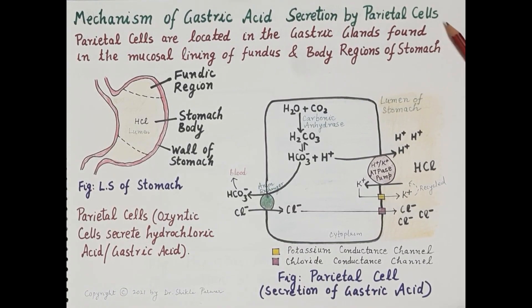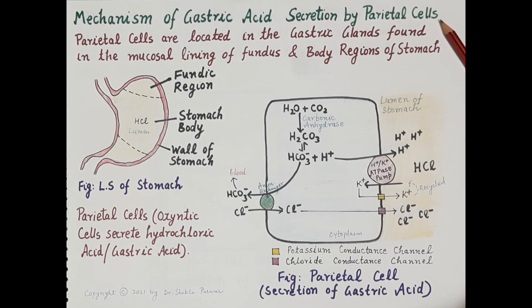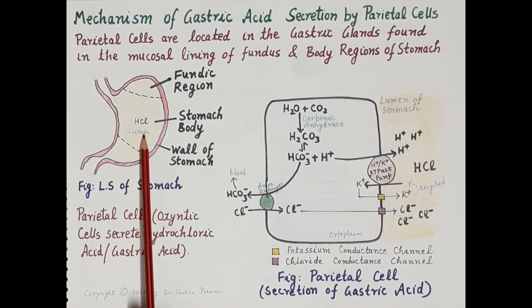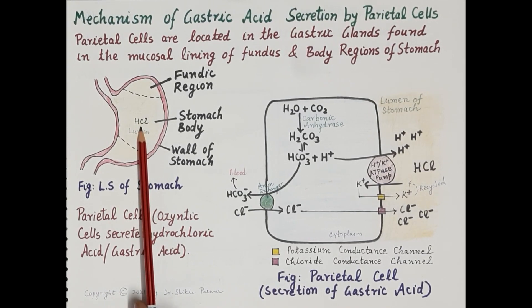Today we are going to study the mechanism of gastric acid secretion by parietal cells, also called oxyntic cells. The most important function of the stomach is to receive food and secrete gastric juice. One of the most important components of gastric juice is hydrochloric acid, that is HCl, or gastric acid.